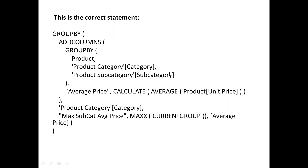To summarize the major differences: SUMMARIZE performs implicit operations; GROUP BY does not. SUMMARIZE supports ROLLUP activities; GROUP BY supports subtotals. CURRENTGROUP is not needed in SUMMARIZE — it is only required when using GROUP BY. Thanks guys.